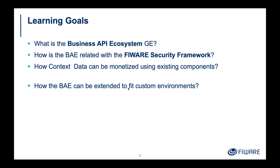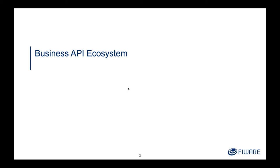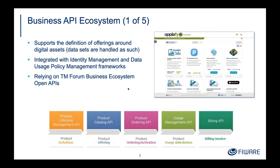First of all, what is the Business API Ecosystem? The Business API Ecosystem is a generic enabler from the FIWARE infrastructure which is intended to create any kind of marketplace. It supports the definition of offerings around any kind of digital asset, and it takes care of the offering life cycle since the creation of the offerings till the billing, the charging, the usage management, and all these business-related aspects. It is fully integrated with the FIWARE identity management and the FIWARE security framework, and it relies on standard TM Forum APIs — exposing its whole functionality through a REST API defined by the TM Forum in their standards.